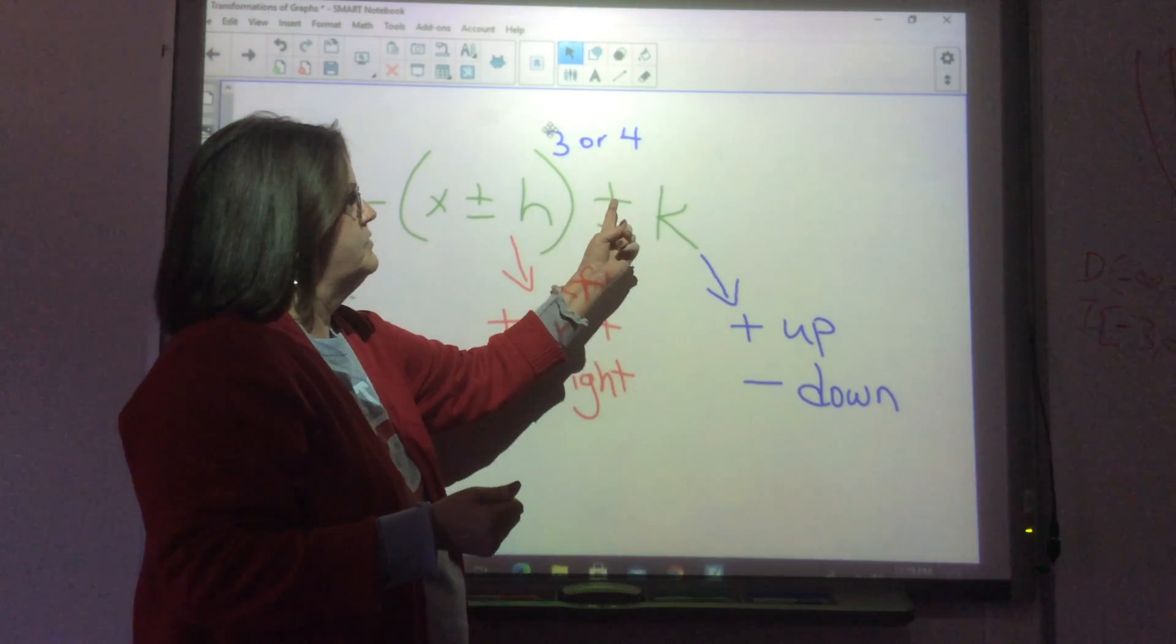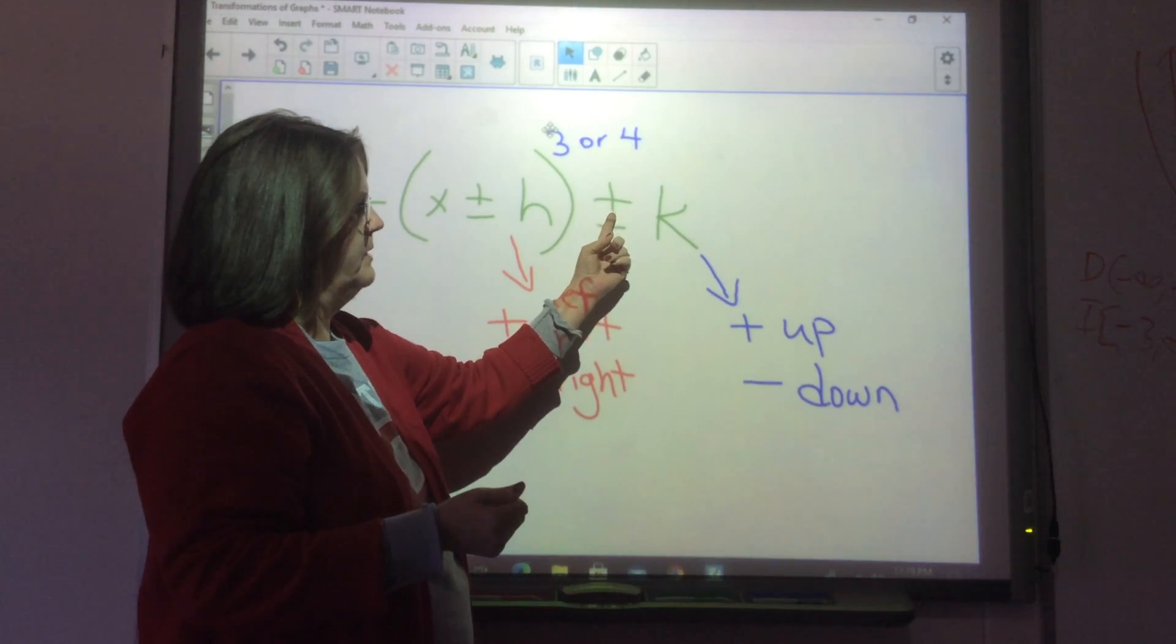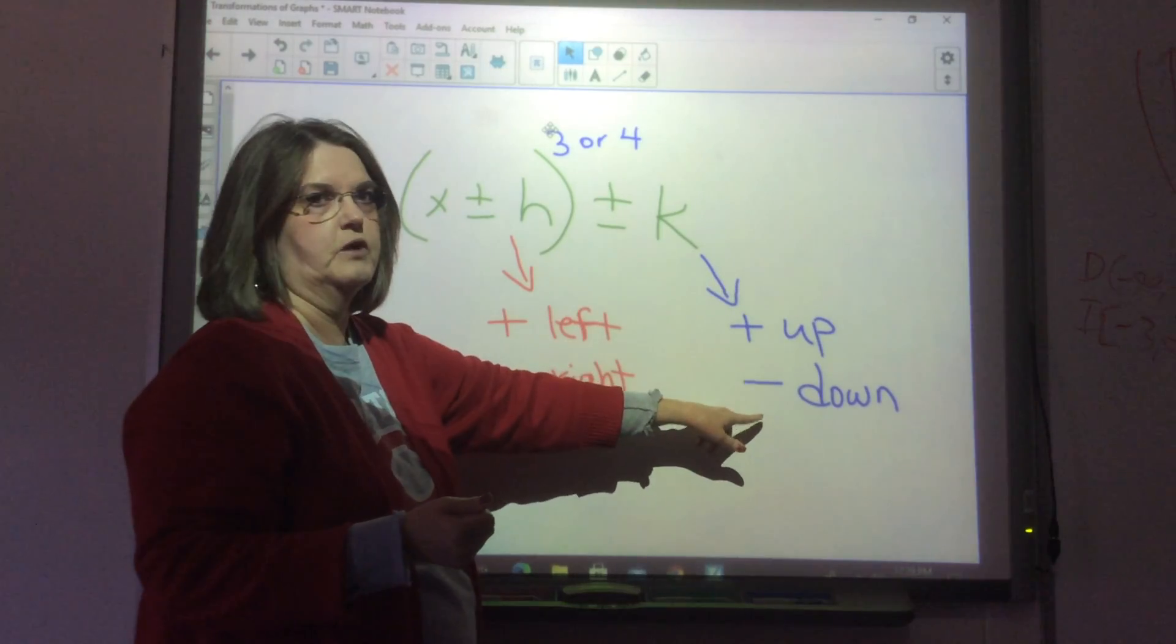Going up and down does what we think it ought to. If we have a plus sign, it goes up. If we have a minus sign, the graph goes down.